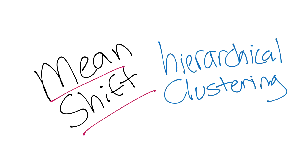Among other things, what this means for us is that unlike k-means where we had to tell the machine we want two clusters or five clusters or whatever, with mean shift and hierarchical clustering, the machine actually figures out how many clusters there ought to be and where those clusters actually are.